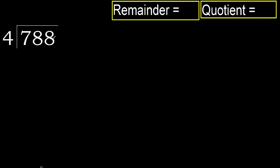788 divided by 4. 7 is not less, therefore with 7: 4 multiplied by which number is nearest to 7 but not greater? 4 multiplied by 2 is 8 — 8 is greater. Multiplied by 1 is 4, it is not greater. Ok, subtract: 7 minus 4 is 3.